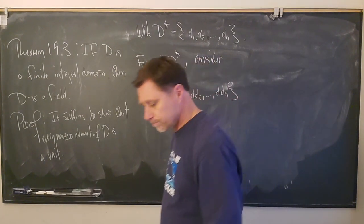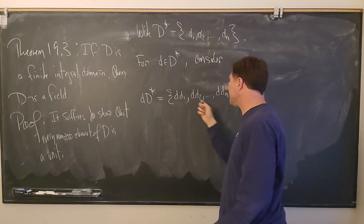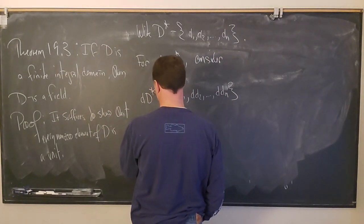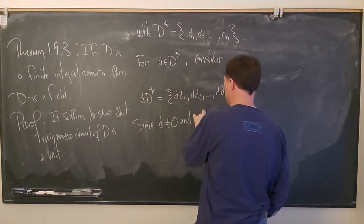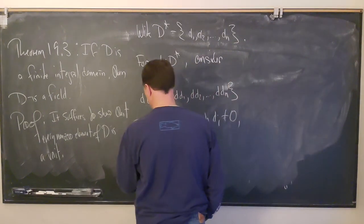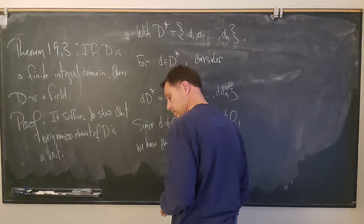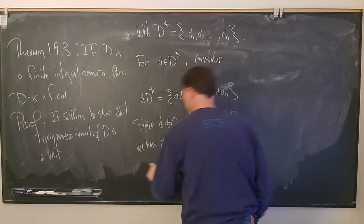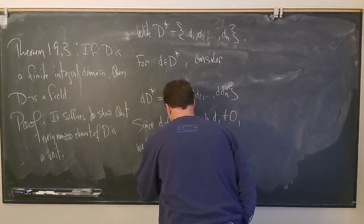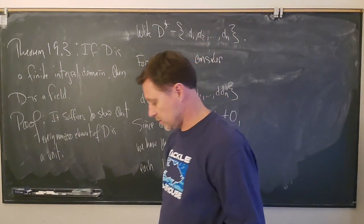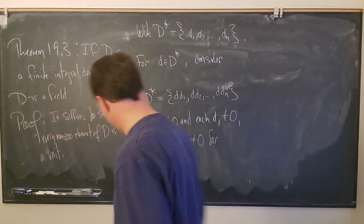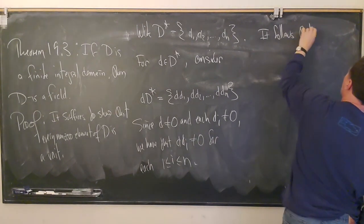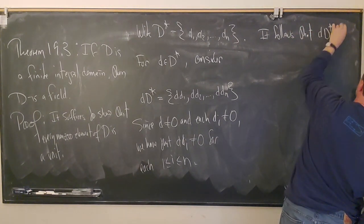Now, d is non-zero and all of the d_i's are non-zero, so all the products here are non-zero. So since d is non-zero and each d_i is non-zero, we have that d·d_i is non-zero for each 1 ≤ i ≤ n. Every element in d·D* is non-zero. So it follows that d·D* is contained in D*.